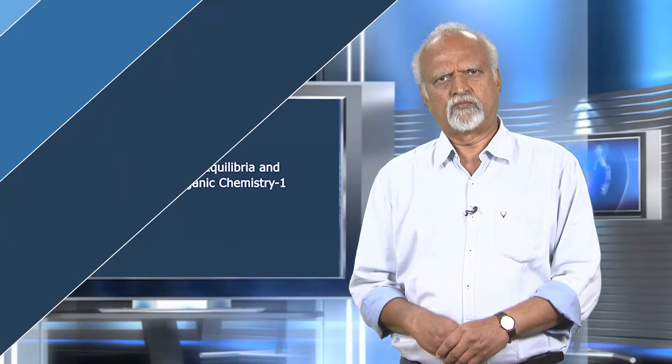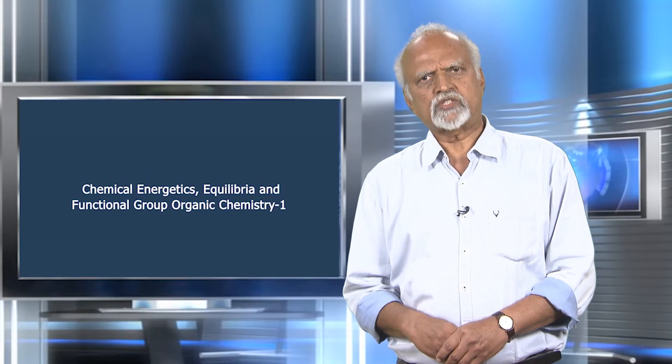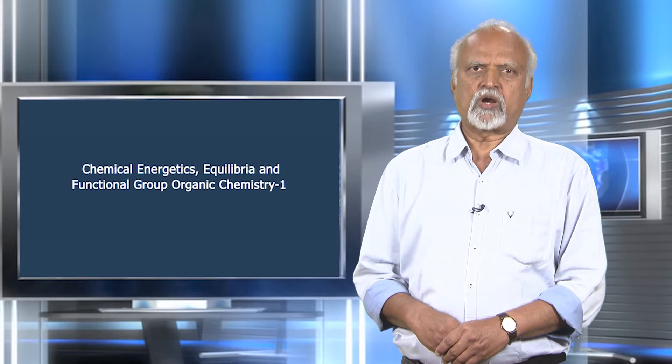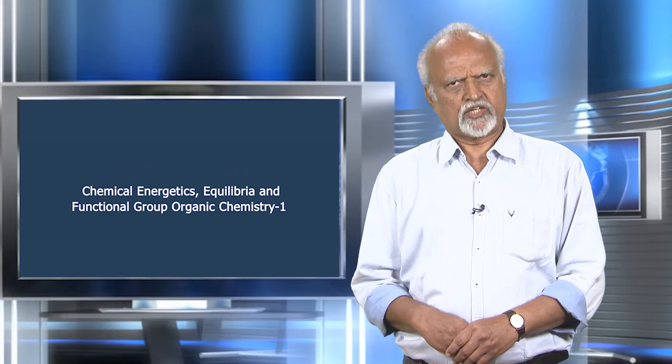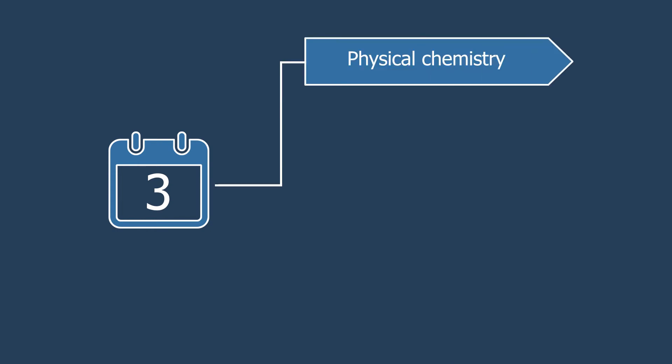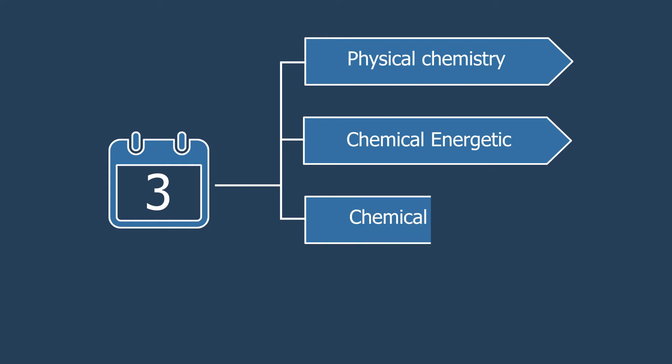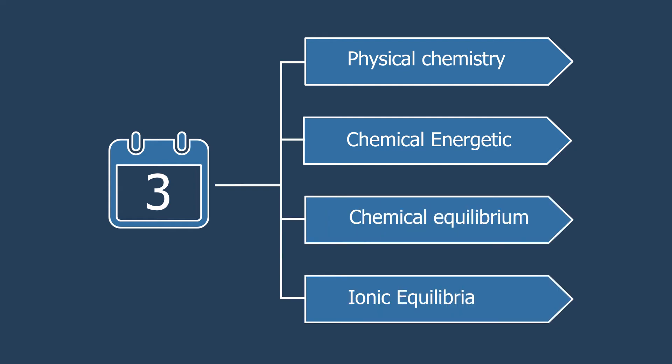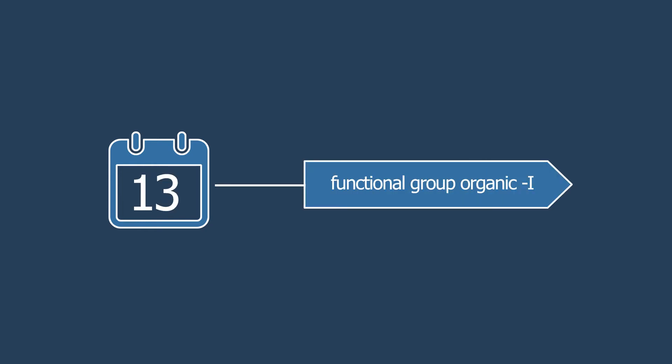This online course will be of 13 weeks duration. The course will be instructed by us along with other experts from reputed places and institutions. The first 3 weeks will consist of learning physical chemistry topics — chemical energetics, chemical equilibrium and ionic equilibria — and the later 10 weeks will include the Functional Group Organic Chemistry 1 portion.